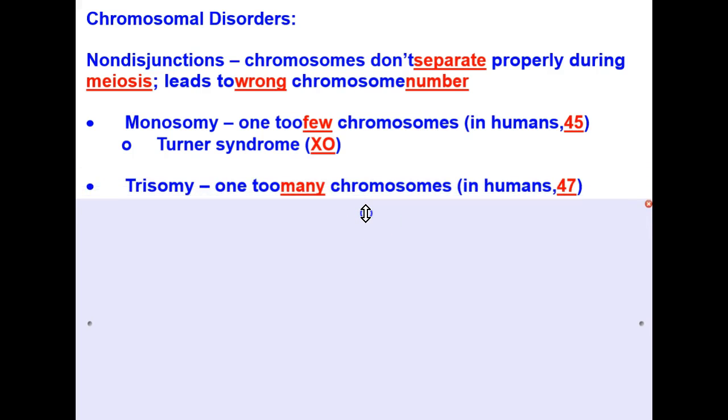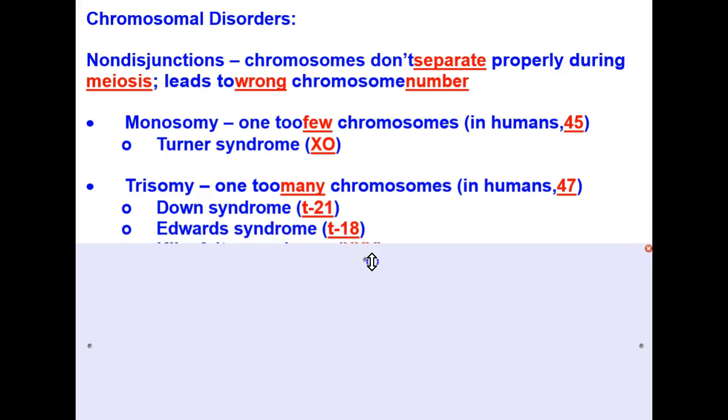Trisomy is having one too many chromosomes, which means in humans instead of having 46 you would have 47. Down syndrome is a pretty popular, well-known chromosomal disorder caused by having one too many chromosome 21, so it's called T21. Edwards syndrome is T18, having one too many 18 chromosomes.